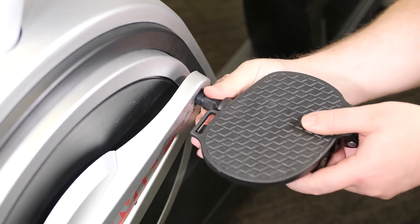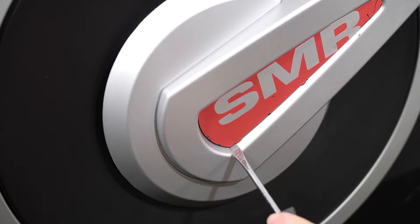Using a flathead screwdriver, carefully pry the left crank cover off of the left shield cover.